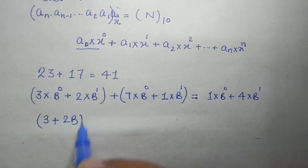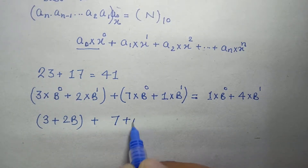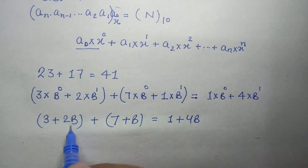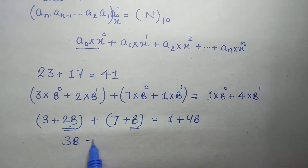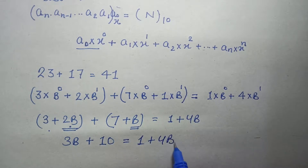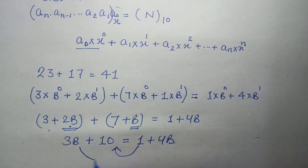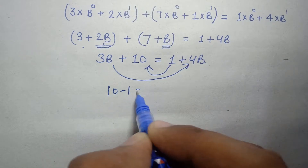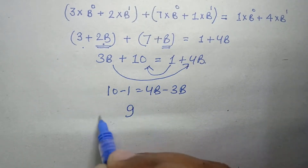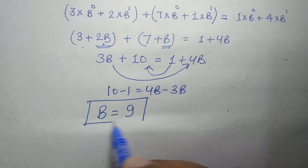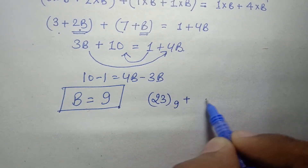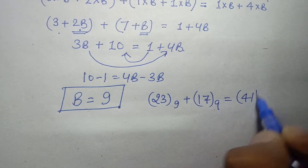This becomes: 3 plus 2b plus 7 plus b equals 1 plus 4b, so 2b plus b plus 3 plus 7 equals 1 plus 4b, giving 3b plus 10 equals 1 plus 4b. Bringing terms across: 10 minus 1 equals 4b minus 3b, that is 9 equals b. So the base is 9, meaning 23 base 9 plus 17 base 9 equals 41 base 9.